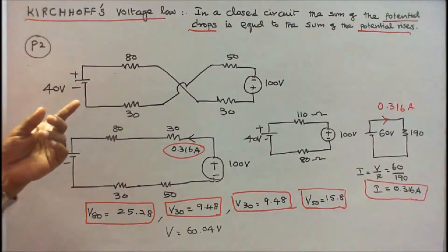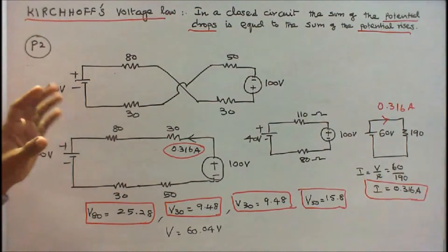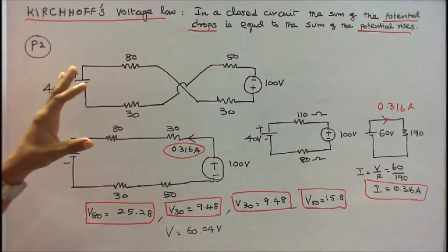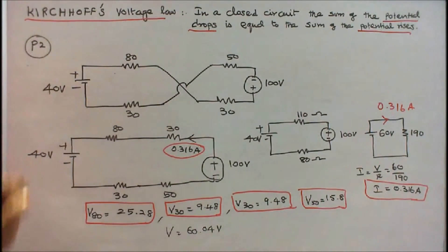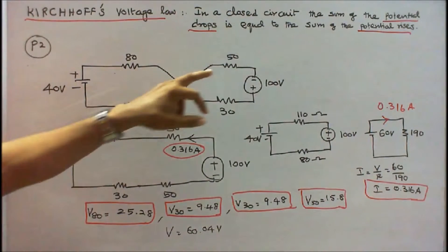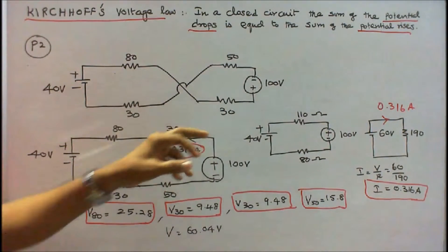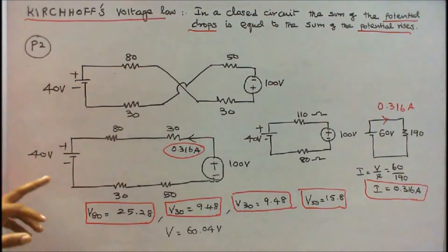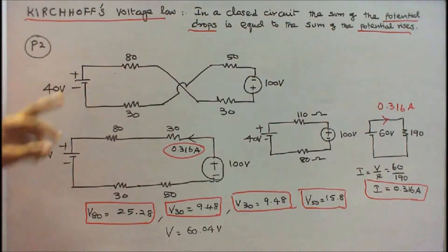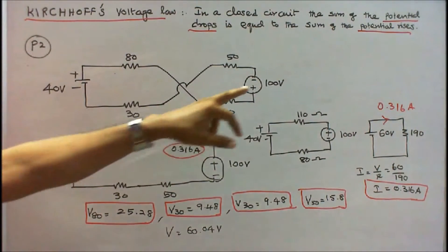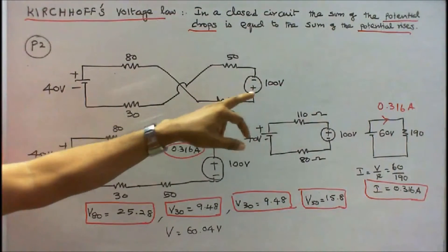Problem number 2: Four resistors and two voltage sources are connected as shown in figure. The resistors are 80 ohm, 30 ohm, 50 ohm, and 30 ohm. I redraw the diagram — both diagrams are the same. This is 40V (plus/minus) and 100V (minus/plus). When I redraw like this, one terminal becomes plus and the other minus, giving 100V.